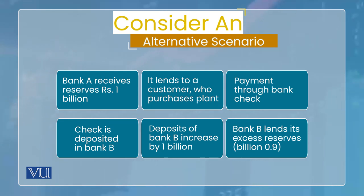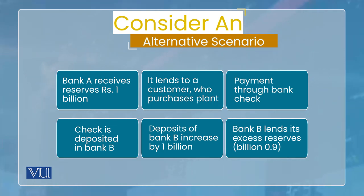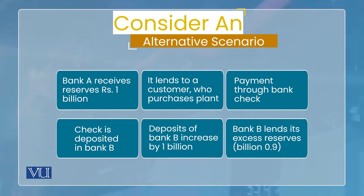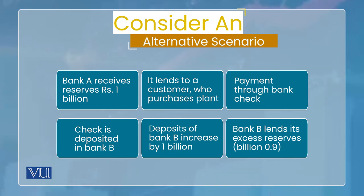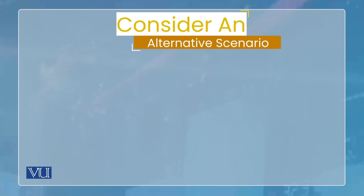This is the fourth lecture in the sequence where the same example has been running. Recall: 1 billion reserve was created, which came into Bank A's account. Bank A lent it to a customer by creating a deposit of 1 billion, which the customer used to purchase goods and services — so the deposit shifted to Bank B. Now in our alternate scenario, everything up to Bank B stays the same. Bank B's required reserves of 0.1 billion went to the central bank, and the remaining 0.9 billion was lent out just as in the previous example. But from here we change the scenario.